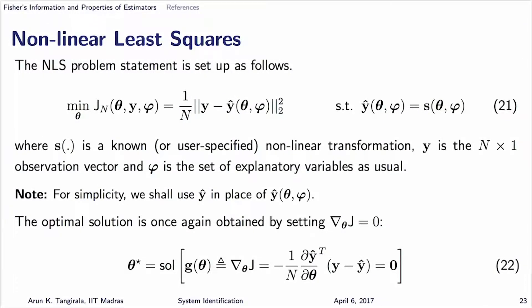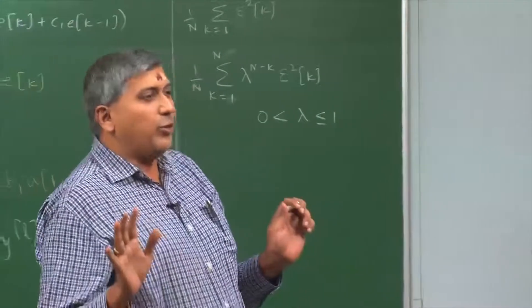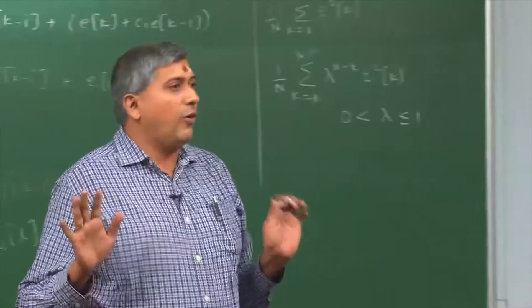Let us now finish very quickly the NLS version. There are very many variants of least squares. If you turn to the literature, you will find all the way from — I am not sure if there is a ZLS, maybe some zonal least squares or zen least squares — but almost all alphabet prefixes have been used up.